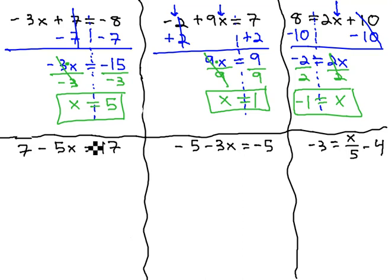Similarly, on the next problem, 7 minus 5x equals 17, we start getting x alone on the left side by getting rid of the 7 single units, with 7 negative units on both sides. This gives us negative 5x equals 10.